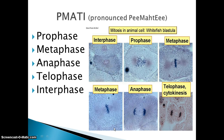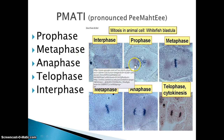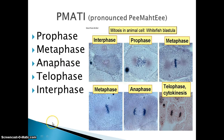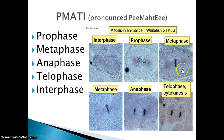PMATI is what they refer to as prophase, metaphase, anaphase, telophase, and interphase. In interphase there are no chromosomes visible. In prophase the chromosomes start to condense and the nuclear envelope breaks down. In metaphase the chromosomes line up in the center.